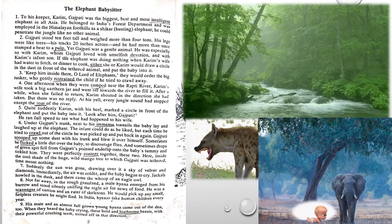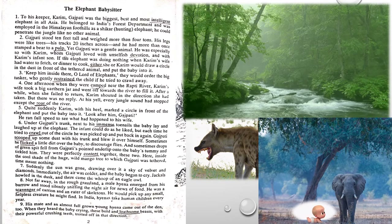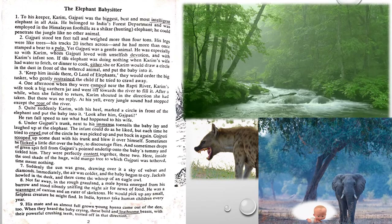They would order the big tusker, who gently restrained the child if he tried to crawl away. The elephant would keep the child inside the circle and not let the baby go out of the circle. Gajapati gently took care of the child and restrained him from crawling away.